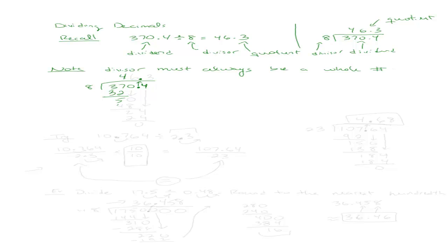It goes in 4 times. 4 times 8 is 32, remainder of 5. Bring down the 0. How many times does 8 go into 50? It goes in 6 times. I get 48, remainder of 2. Bring down the 4. 8 goes into 24 a total of 3 times. Notice I wrote this 3 behind the decimal point because the 4 I brought down was also behind the decimal point. 3 times 8 is 24, remainder of 0. So 370 and 4 tenths divided by 8 is 46 and 3 tenths.